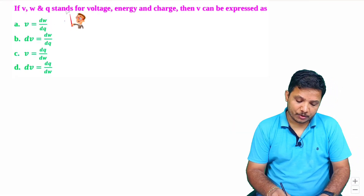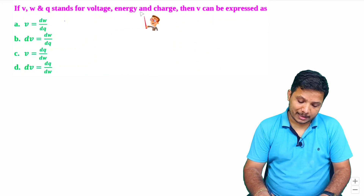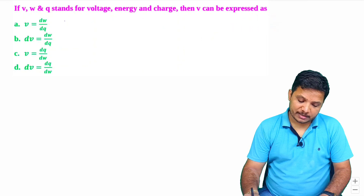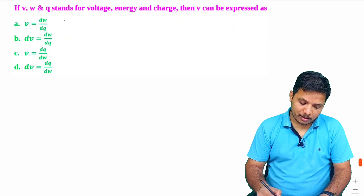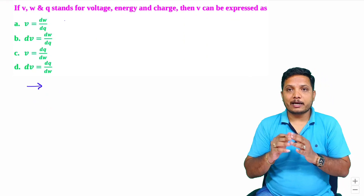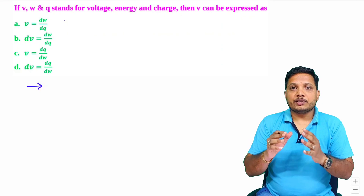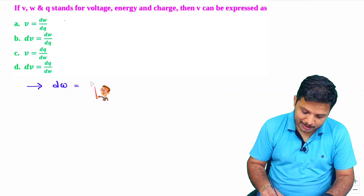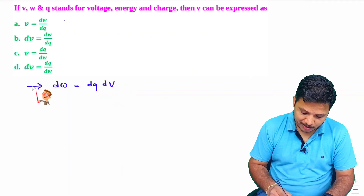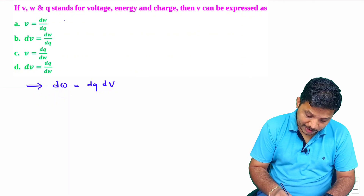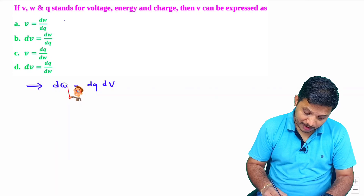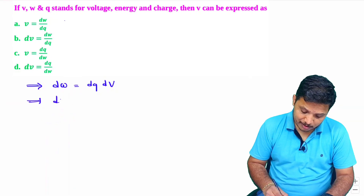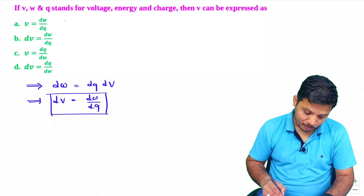Let us have one more question. If V, W, and Q stand for voltage, energy, and charge respectively, then V can be expressed as — what will be the relation of V, W, and Q? One should know that when you want to calculate work done, the differential of work done DW equals the differential of charge times the differential of potential. So DV equals DW by DQ. This is the basic relation.